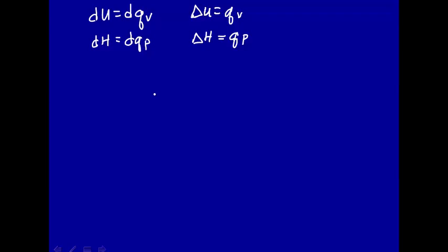So this is delta U. Now, what does delta H, delta U, du, or dH have to do with heat capacity? Remember from the second lecture, we said that you can calculate heat transferred as heat capacity times delta T. So these quantities are probably related to heat capacity.